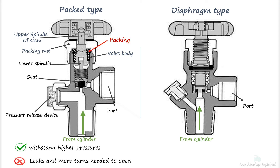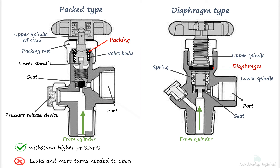Conversely, in a diaphragm valve, a diaphragm separates the upper and lower stems. The lower stem controls the gas flow by either shutting it off or allowing it to pass through the valve, and the lower spindle assembly is enclosed in a spring which pushes it away from the seat when the valve is opened. The upper spindle is threaded into the gland nut. The key advantage of a diaphragm valve is that it can be opened with just half or three-fourths of a turn, making it more convenient; however, these valves are less suitable for handling higher pressures.